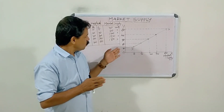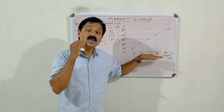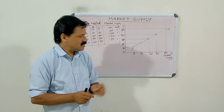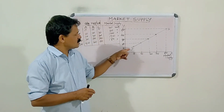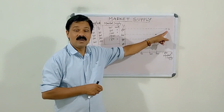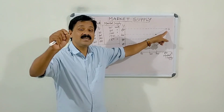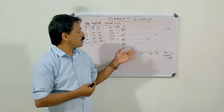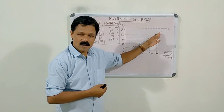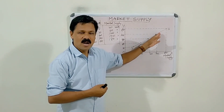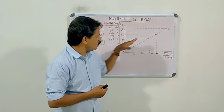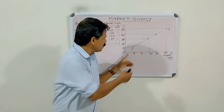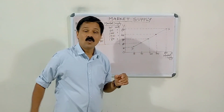When price increases, quantity offered for sale will also increase. You should remember here that the supply curve SS will be comparatively much flatter than the individual supply curve. That is, the market supply curve will be much flatter than the individual supply curve.